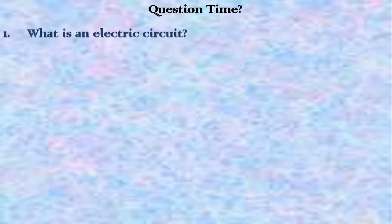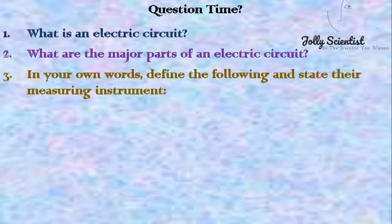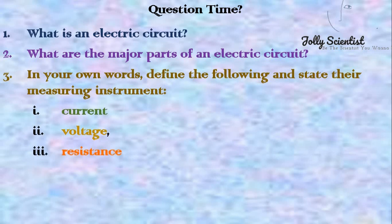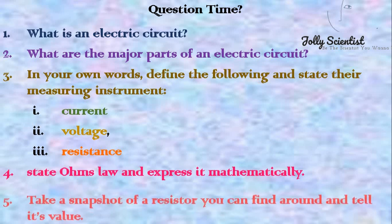Question time. 1. What is an electric circuit? 2. What are the major parts of an electric circuit? 3. In your own words, define the following and state their measuring instruments: current, voltage, resistance. 4. State Ohm's law and express it mathematically. 5. Take a snapshot of a resistor you can find around and tell its value.